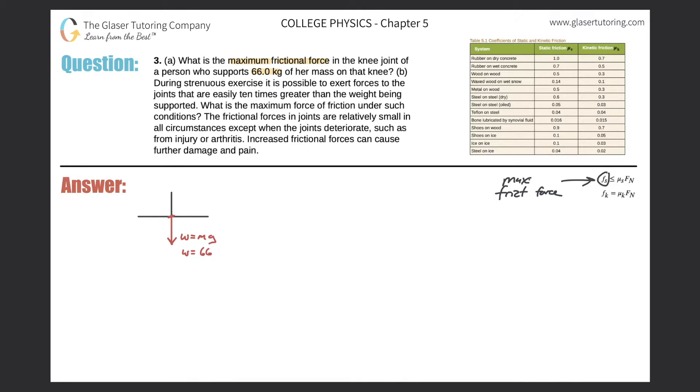So the weight is the 66.0 kilograms multiplied by the gravitational acceleration of 9.80. Simply just plug that into the calculator: 66 times 9.8 = 647, let's call it 647, and that's in terms of newtons, and that's pointing down.